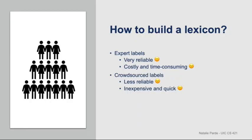There are many ways that you can build a lexicon for use in your NLP applications. Two of the most common ways are by obtaining expert labels or by crowdsourcing your labels. Obtaining labels from expert annotators involves identifying individuals who you expect to be highly knowledgeable about your subject domain. For instance, if you're annotating a corpus of medical documents, you might recruit doctors as your expert annotators. You personally train those experts in your labeling scheme, and then they provide annotations for your set of documents.